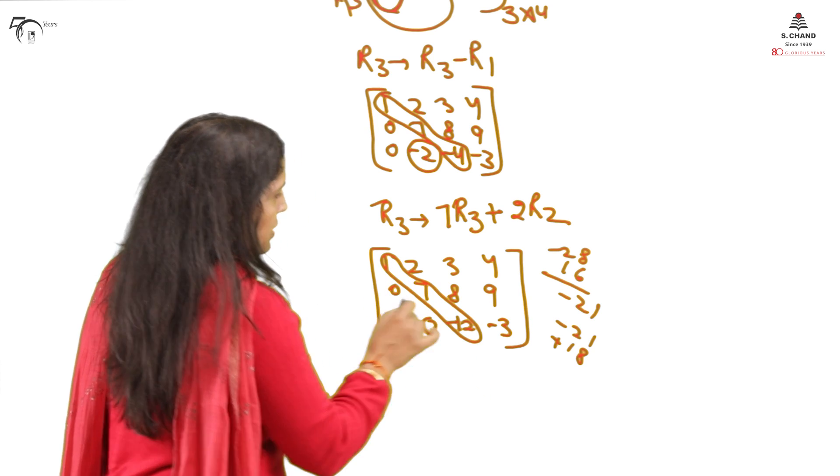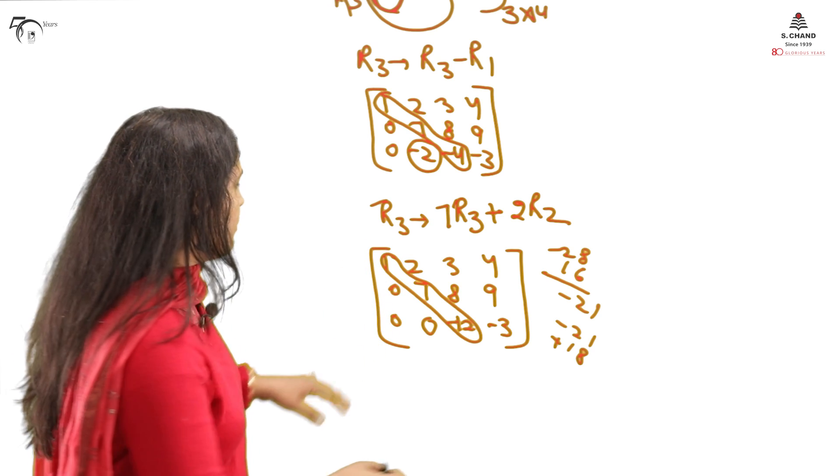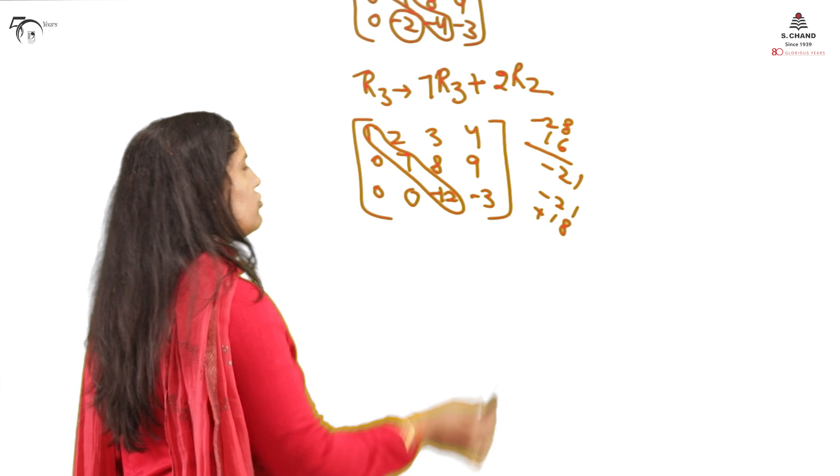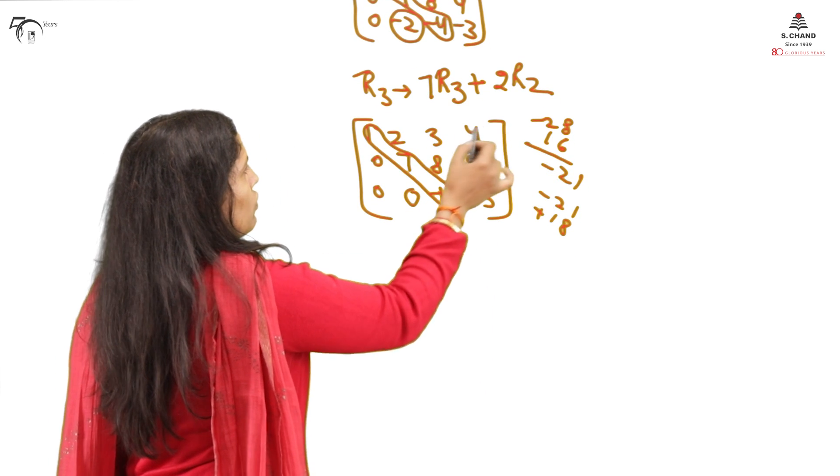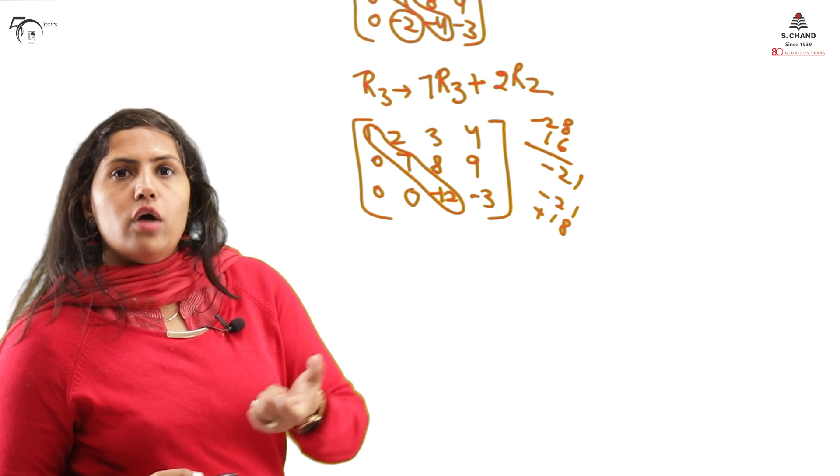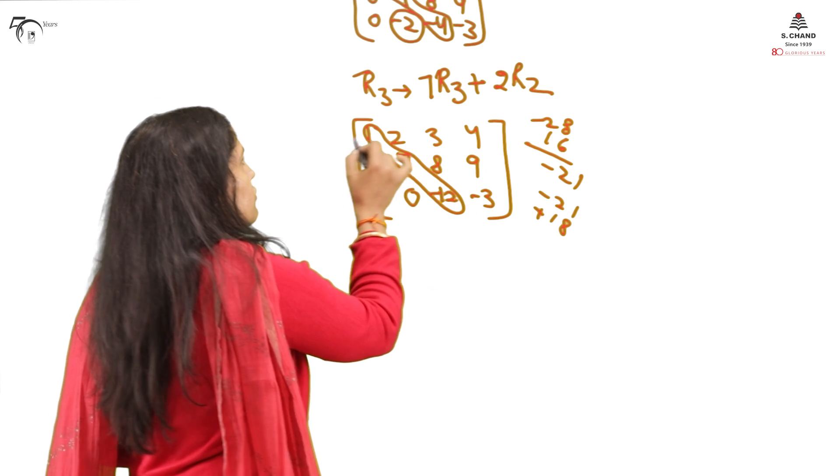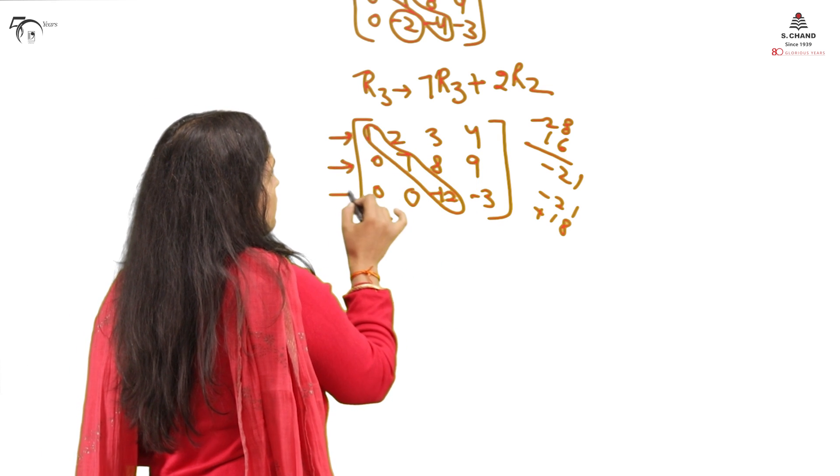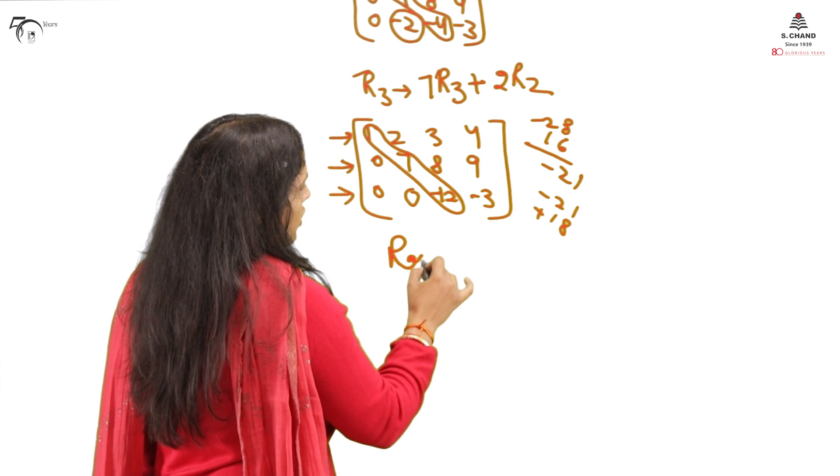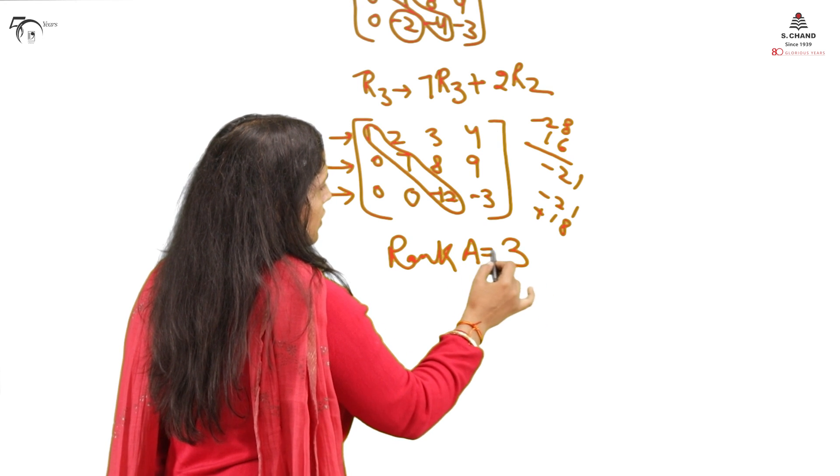Now how to judge the rank by this method. You just check how many non-zero rows you have. Non-zero row means if at least one non-zero entry you have in the row. This row is non-zero, this row is non-zero, this also non-zero. So how many non-zero rows you have? Rank of this matrix is 3.